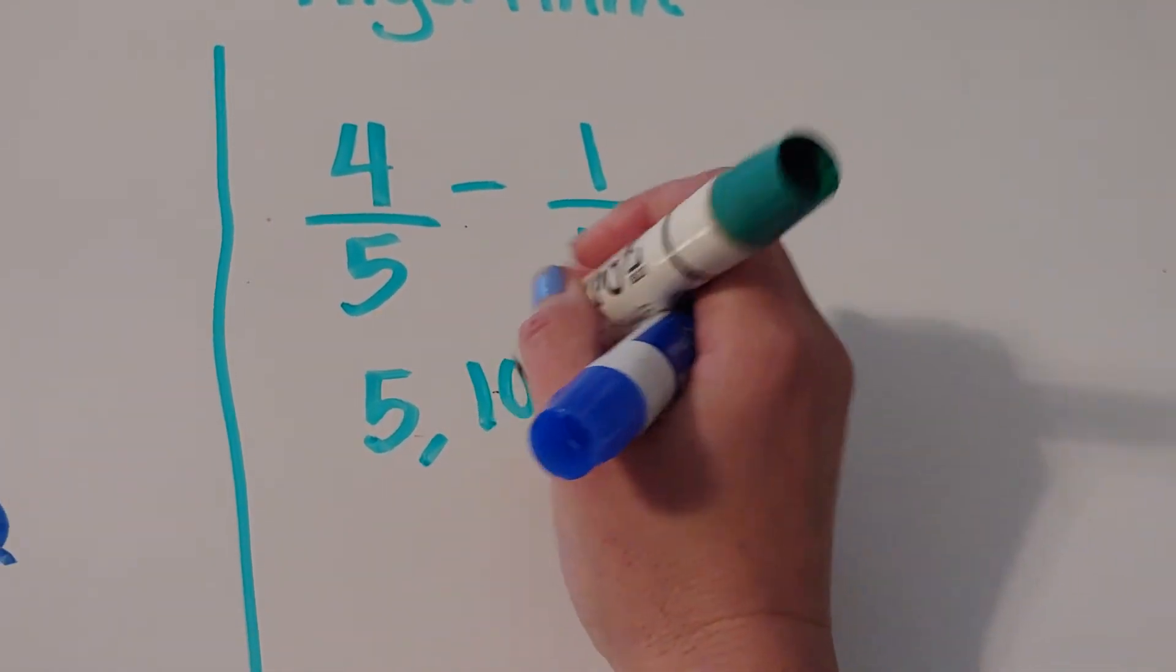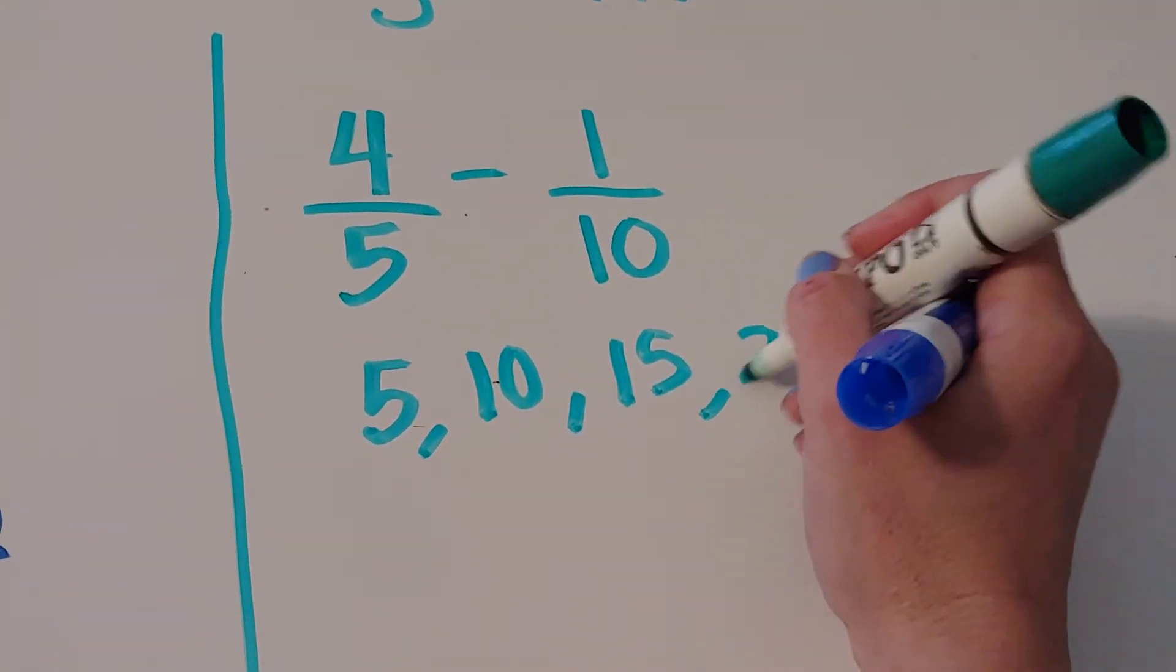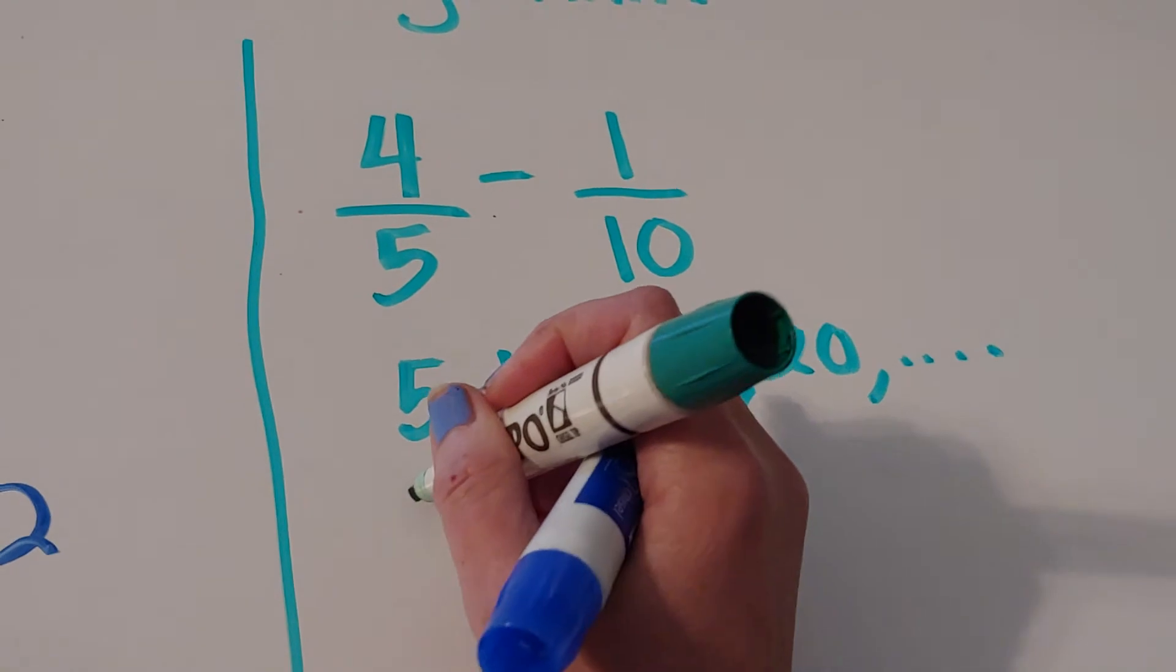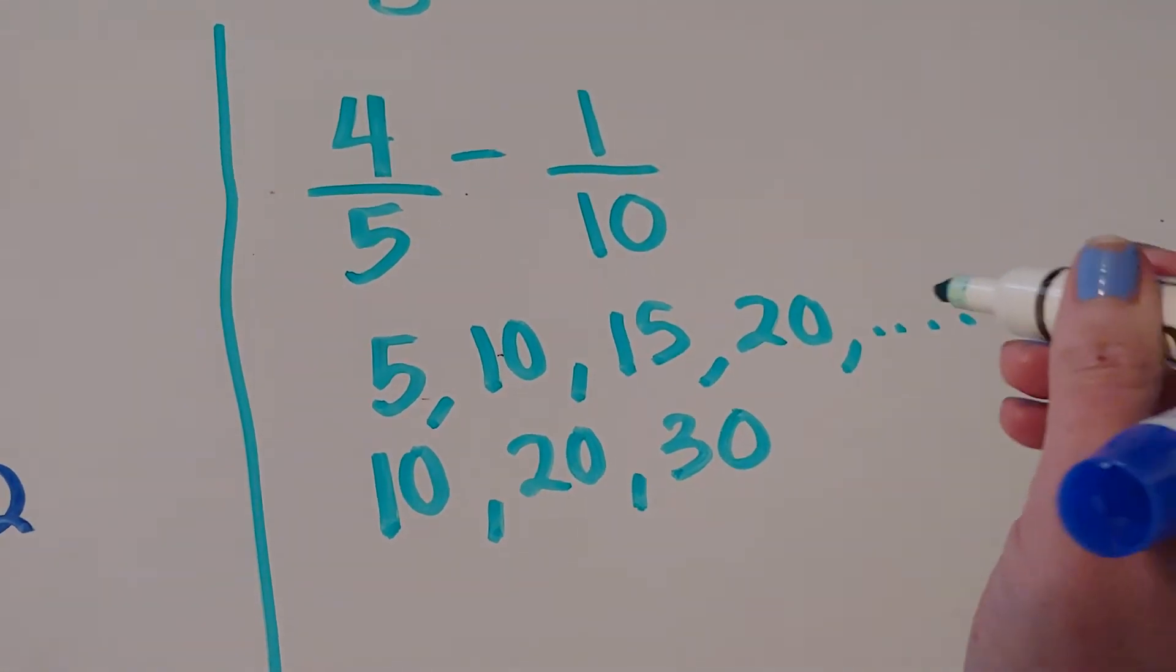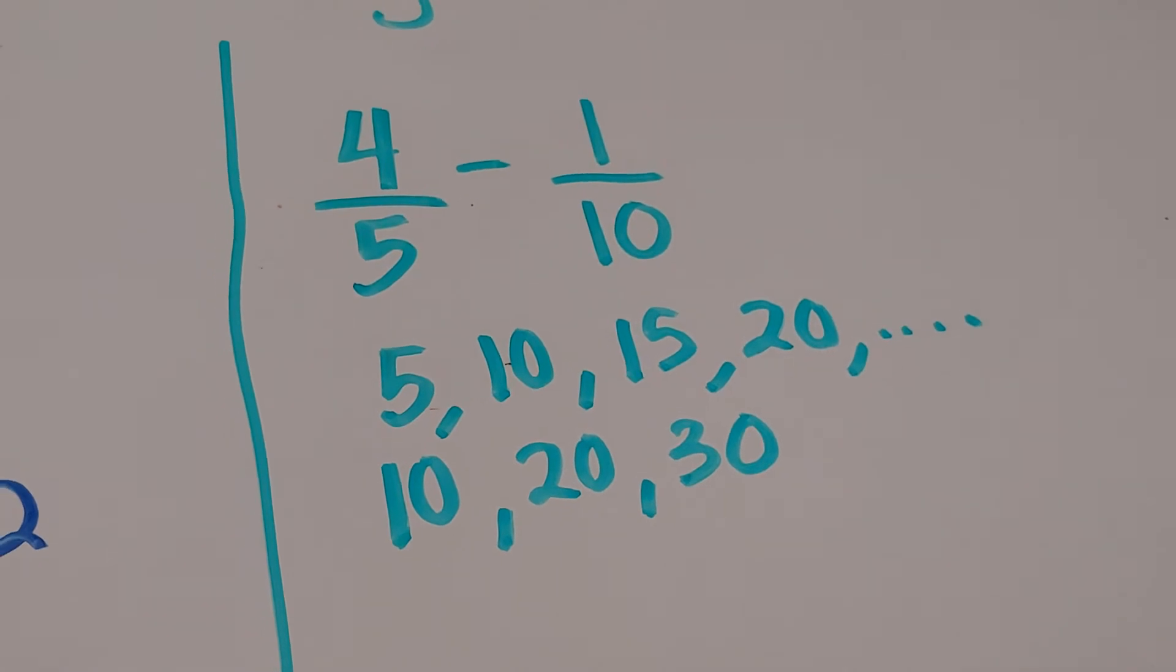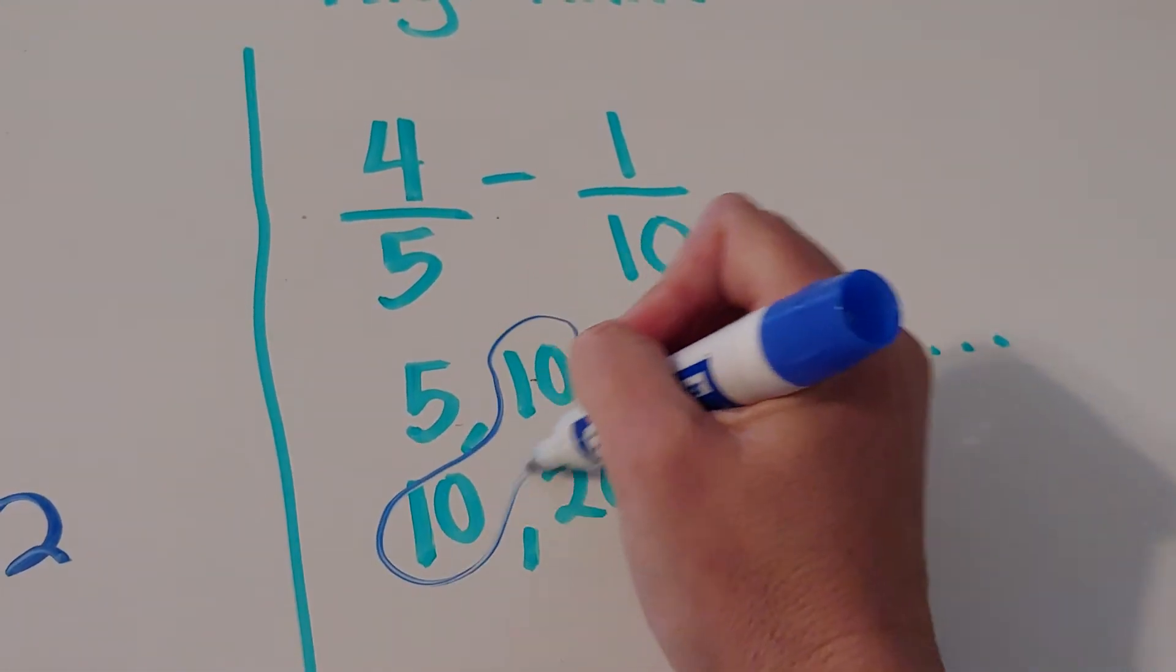So again, you want to think of multiples of 5. So 5, 10, 15, 20, on and on and on. And then I want multiples of 10. 10, 20, 30. And we want the first number on both lists. And as you can see, the first number on both lists is 10.